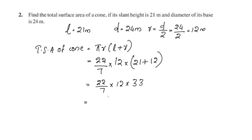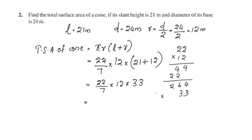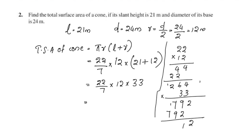This equals 22 by 7 into 12 into 33. Multiplying 22 into 12 gives 264. Then 264 multiplied by 33: working through the multiplication gives 8712.